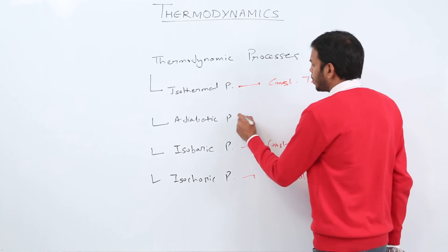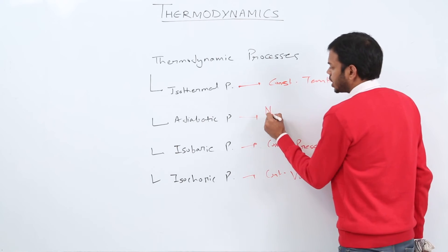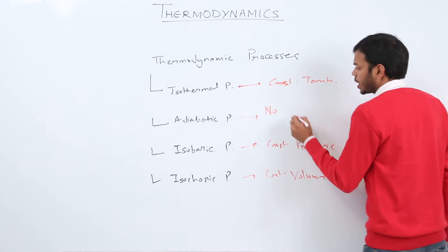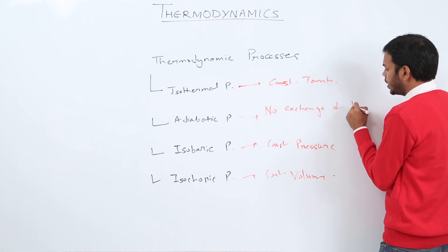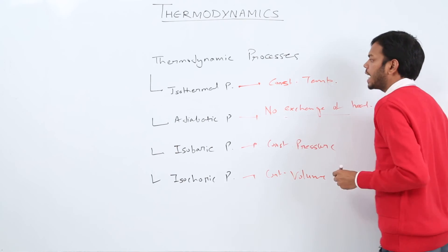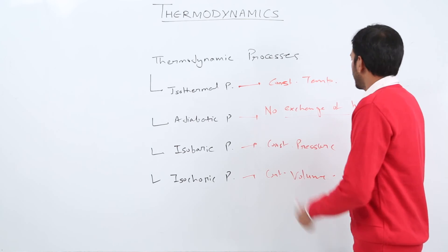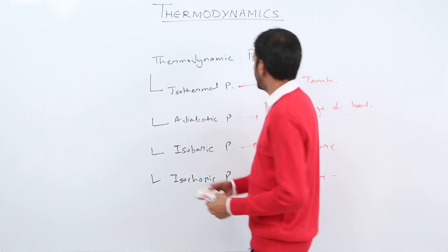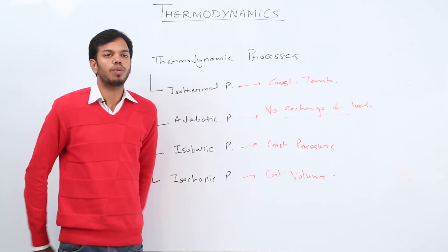Whereas adiabatic process is a process in which everything changes but there is no exchange of heat from system to surrounding. All these processes have their own equations. And now we are going to elaborate in detail what are the equations of these processes and what will be the work done if we undergo such kind of process.